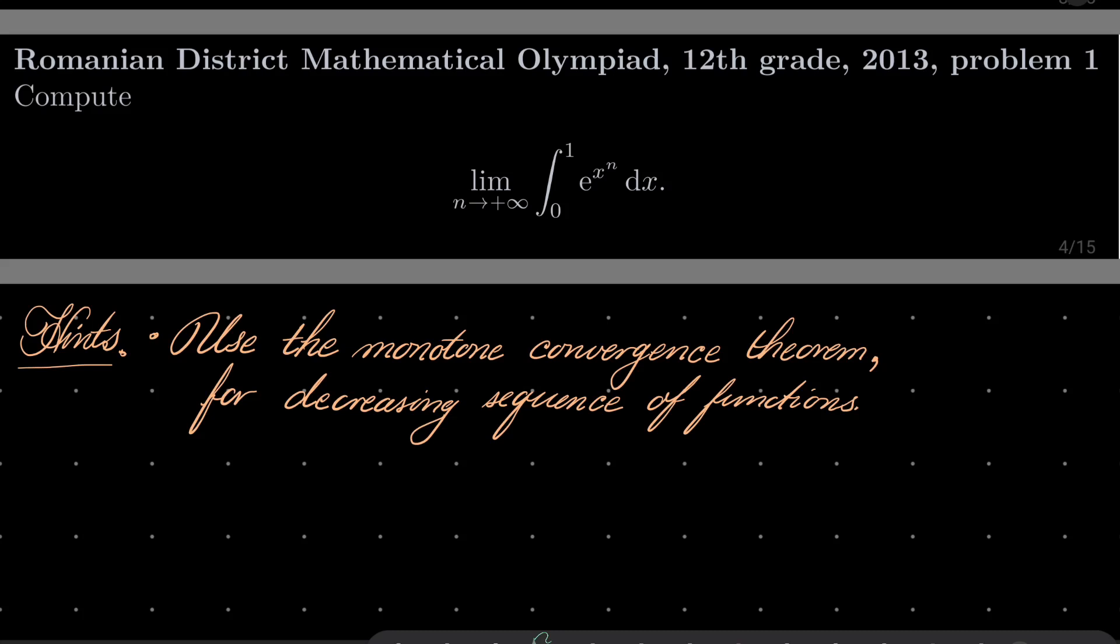It has two versions. We will use the version for decreasing sequence of functions, so basically you should show that this function right here, as n becomes large and larger, these values become smaller and smaller.